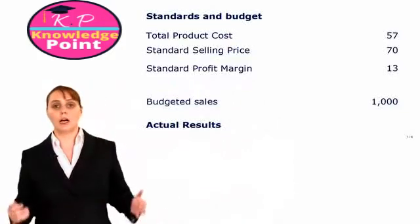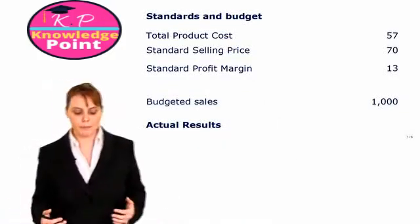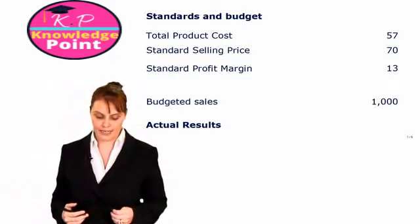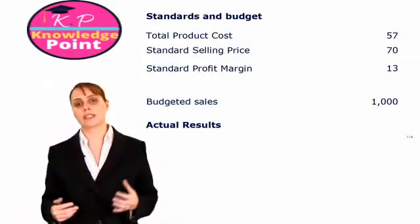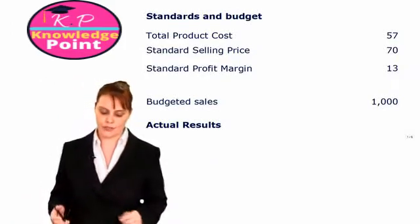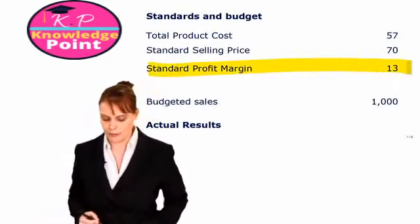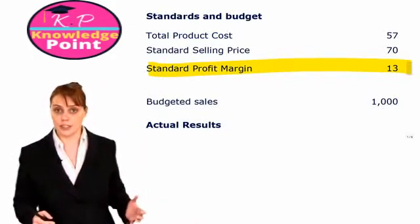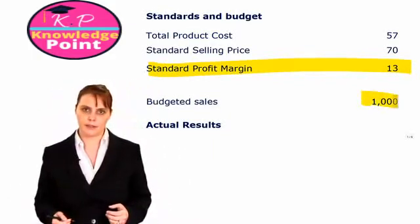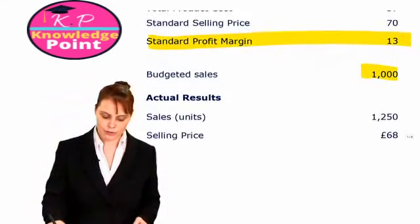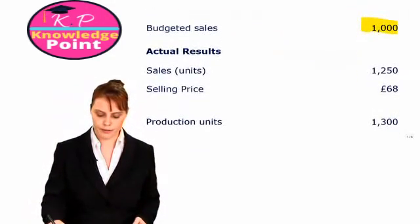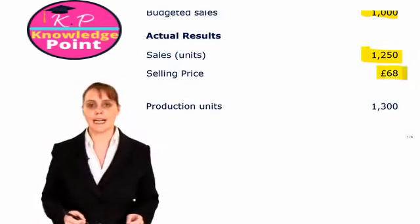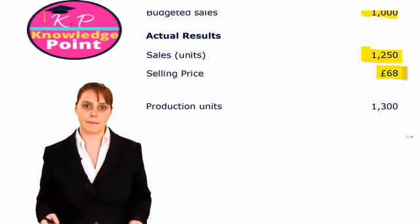In the question, our original standards from our budgeting at the start of the year: our total cost per unit was £57, with a standard selling price of £70, giving us a standard profit margin of £13 per unit. We budgeted to sell 1,000 units. Our actual results show that we actually sold 1,250 units at a selling price of £68 per unit.